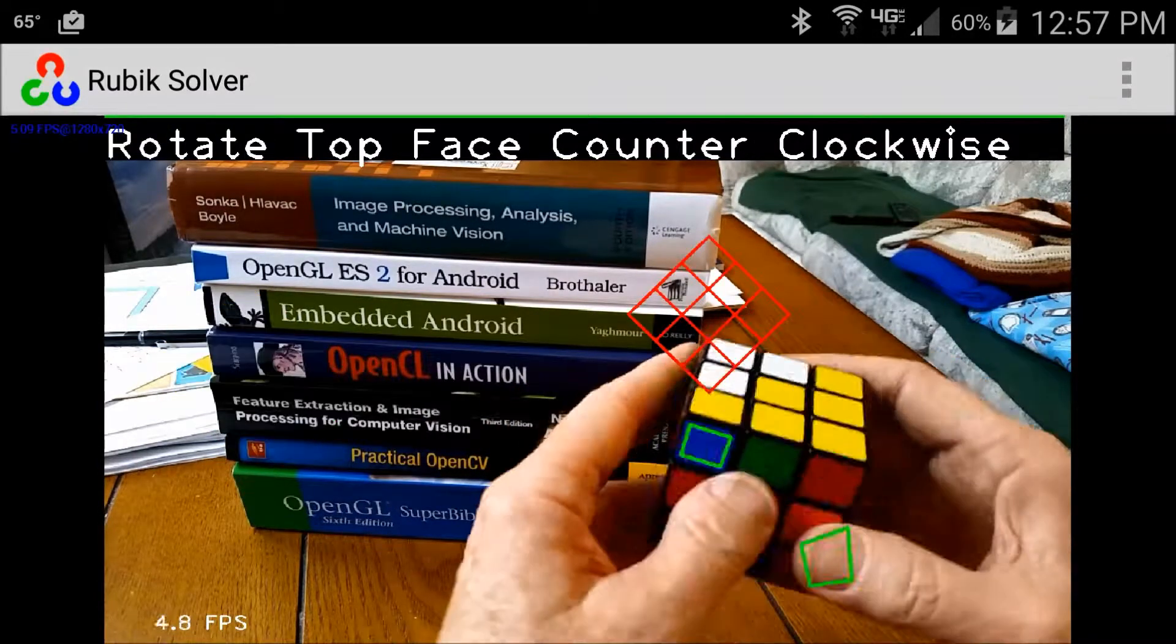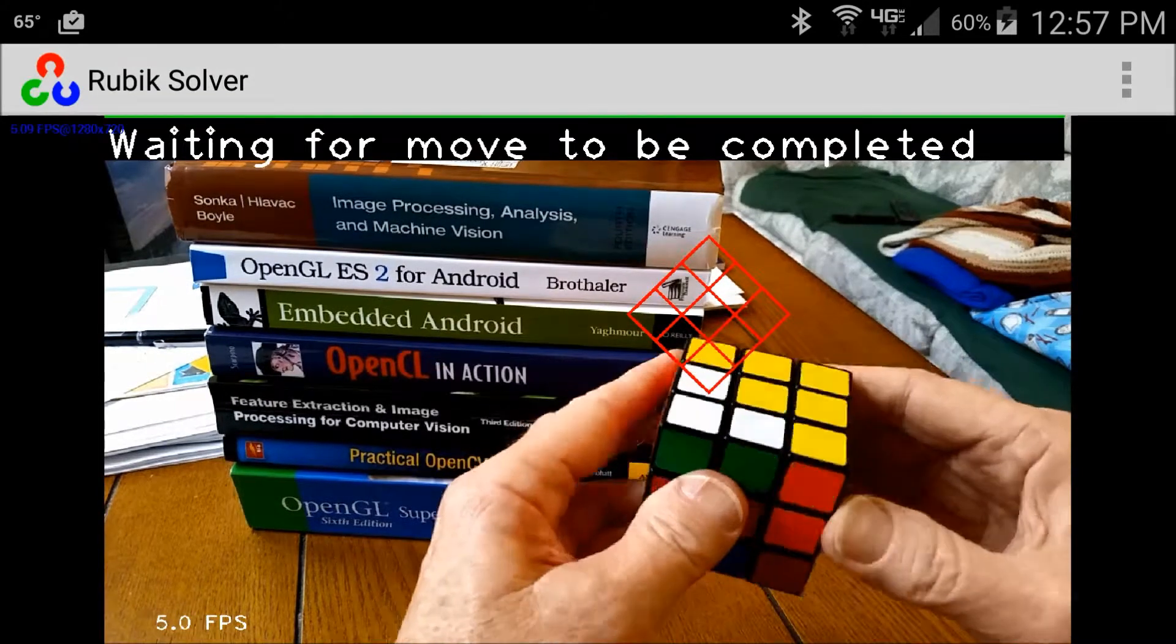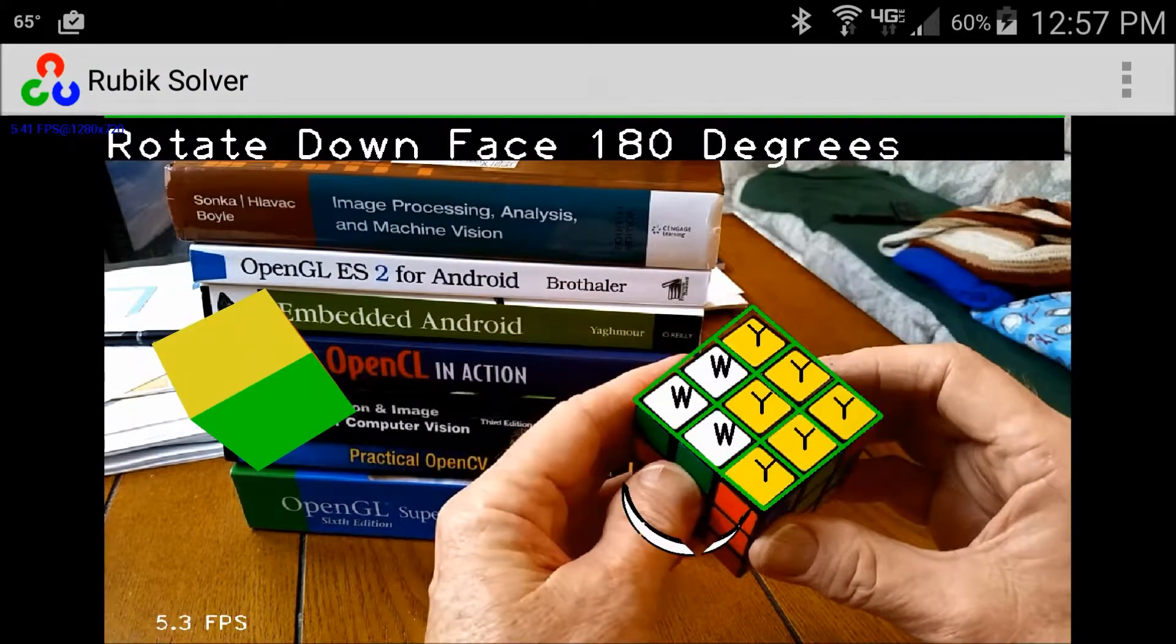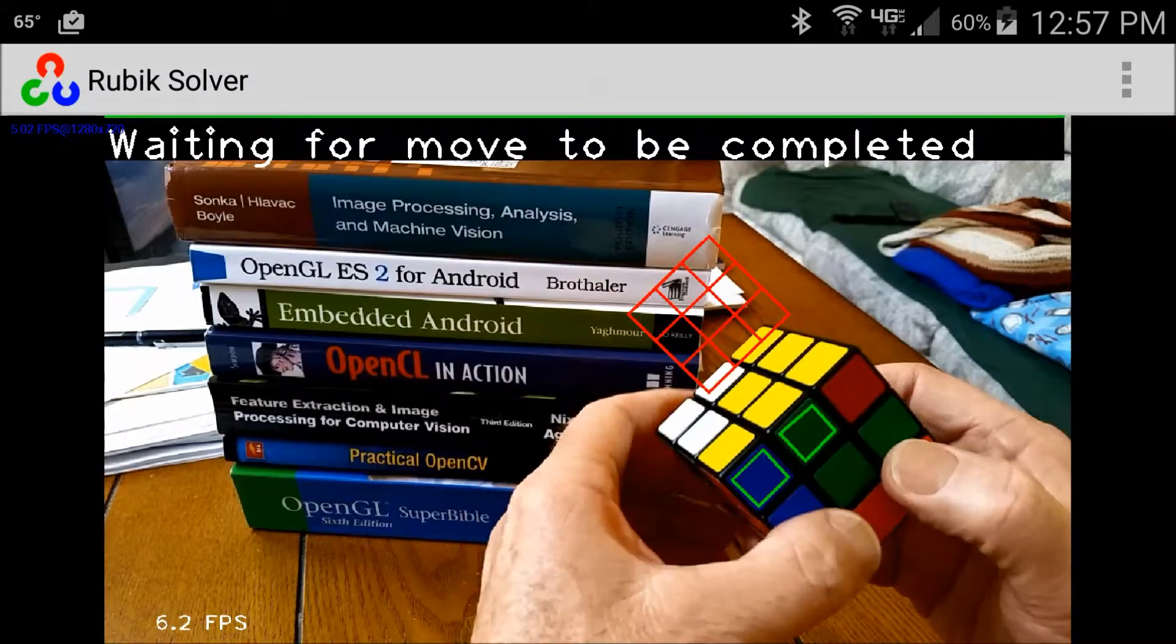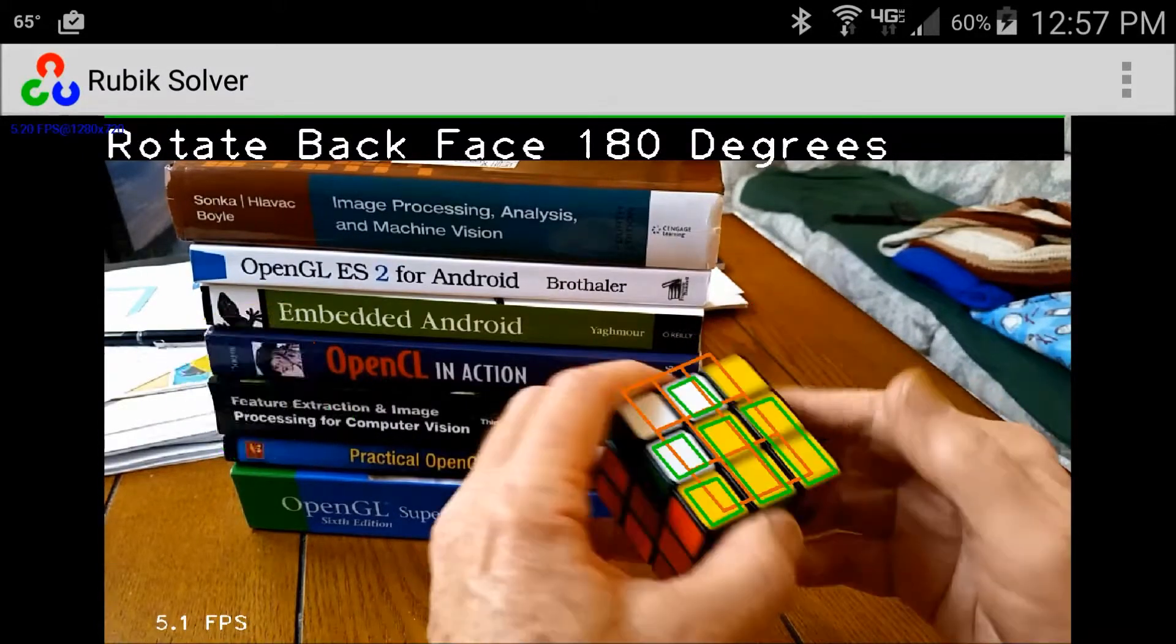Typically, about 20 moves are required to restore the cube to its original configuration. This application is constructed primarily in the Java language and, in addition to many Android facilities,